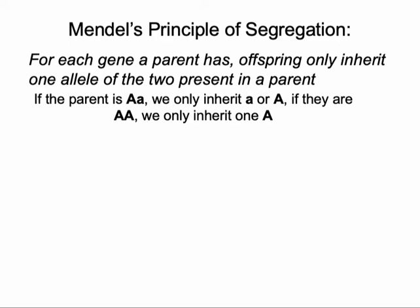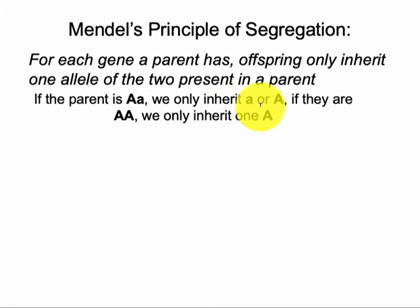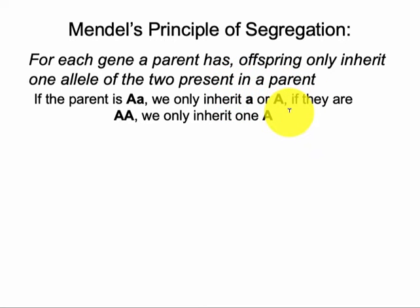So let's say a parent that is heterozygous for gene A has a dominant version and a recessive version of gene A. Their offspring will only inherit either the dominant allele or the recessive allele, but not both. Of the two alleles that the parent has, the offspring is equally likely to get either version — so there is a 50% chance of getting the recessive allele or the dominant allele if the parent is heterozygous.